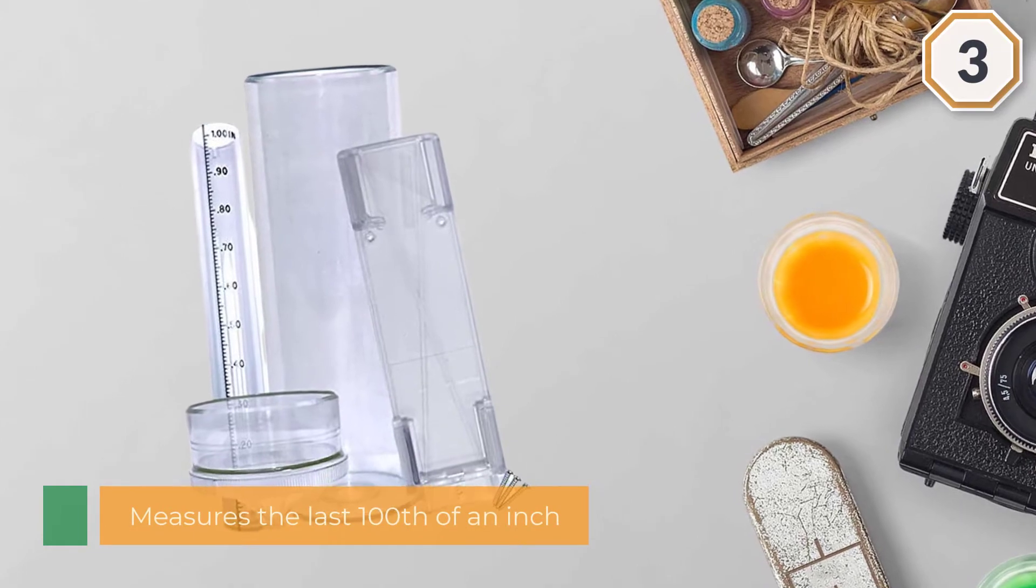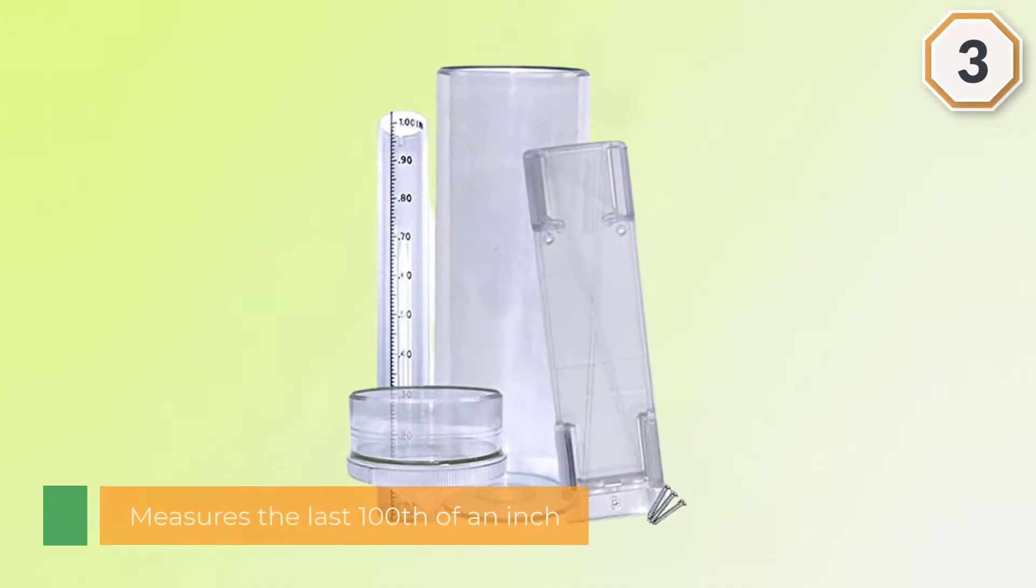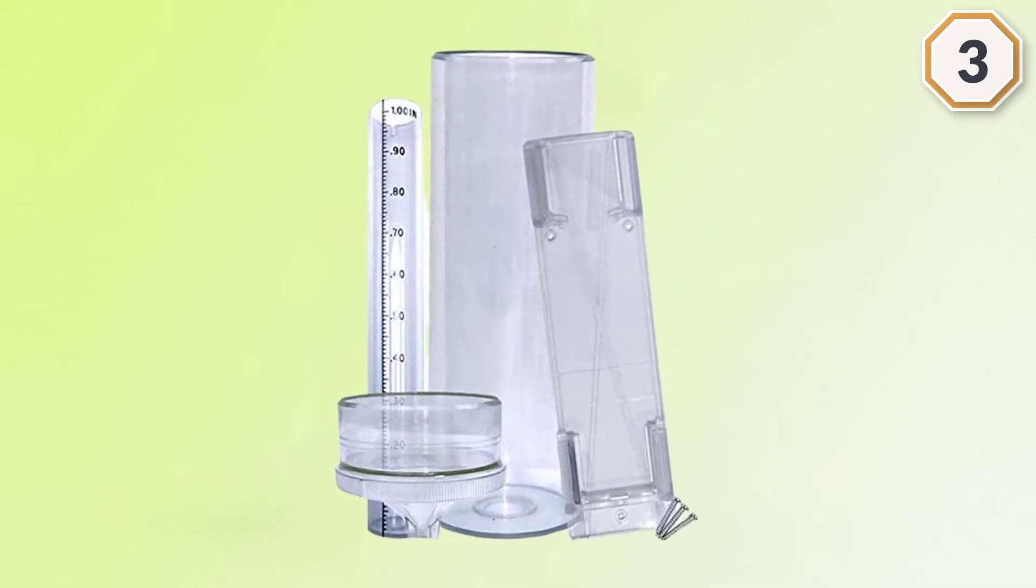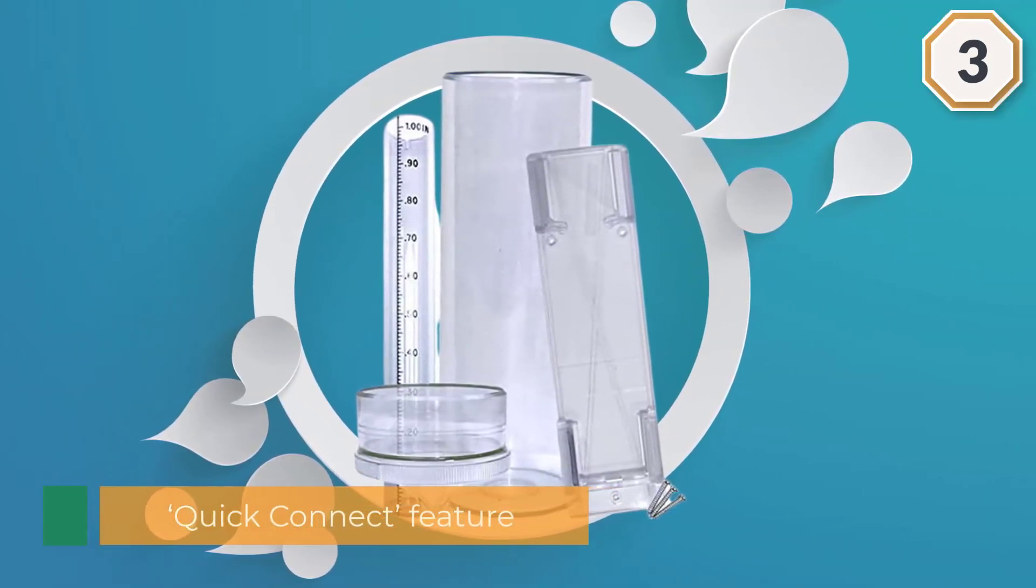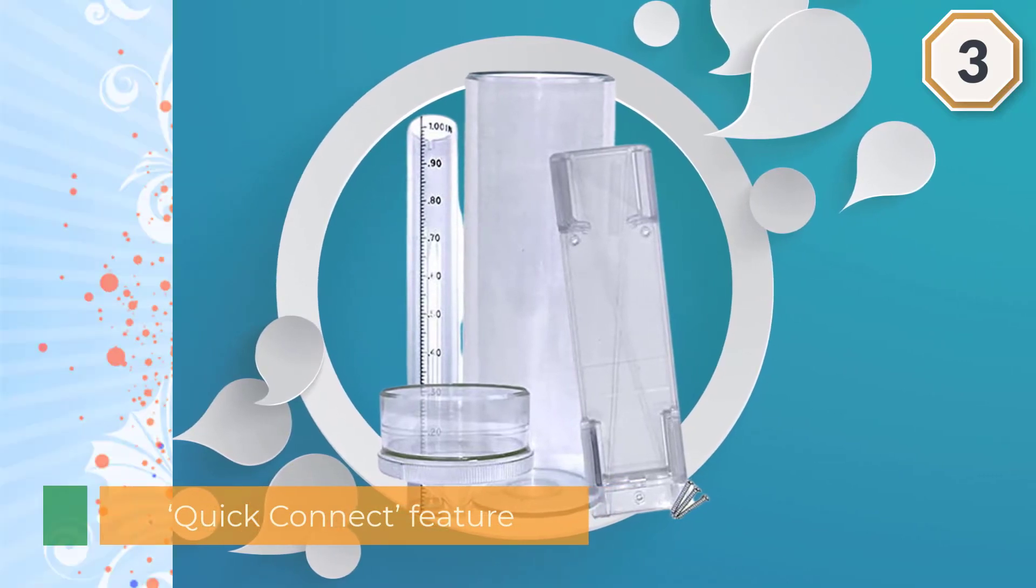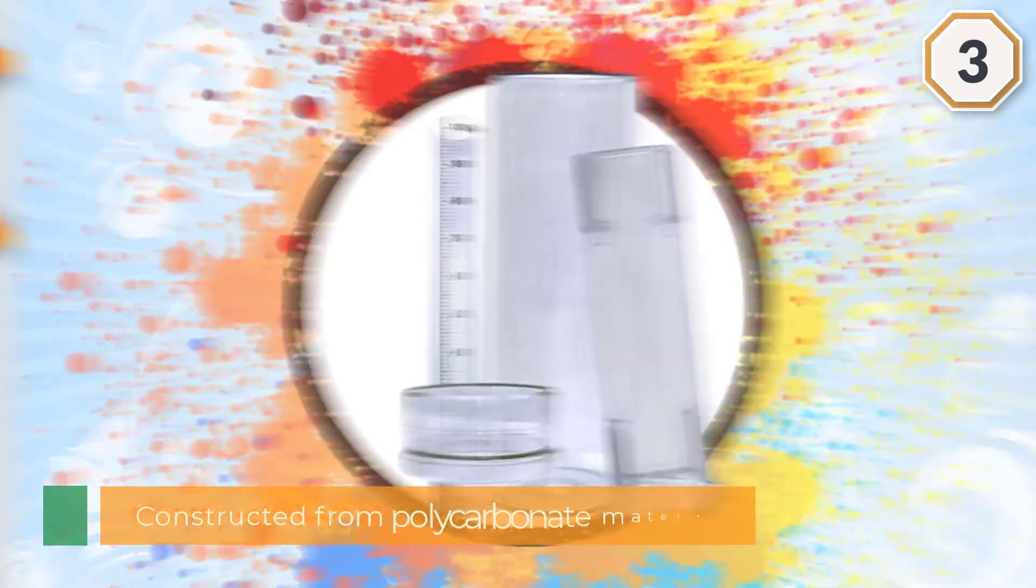The Stratus Precision Rain Gauge is a high accuracy precipitation measurement tool that measures to the last one hundredth of an inch and is uniquely manufactured to meet U.S. Weather Bureau standards. It is quickly and easily installed on a post by means of a quick connect feature which enables you to rapidly take out the cylinder whenever you need to take measurements or clean and maintain it.